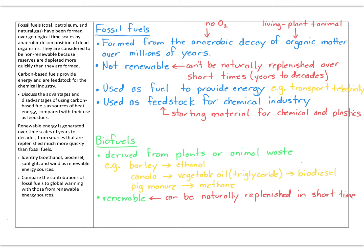Biofuels are renewable — they can be replenished in a short time. We can grow more barley and turn it into ethanol; yes, we get CO2 emissions from burning the ethanol, but when we grow the barley again that CO2 gets absorbed again. Similarly with canola — the CO2 released in burning the biodiesel will be absorbed when the next crop grows. Pig manure produces methane, and since the pigs eat plants, the CO2 released can be replenished when those plants regrow. That's what makes biofuels renewable.